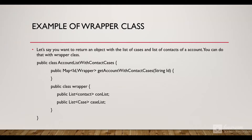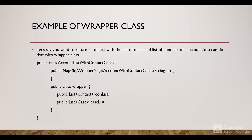Let's see an example of a wrapper class. Say you want to return an object with a list of cases and a list of contacts of an account. As we know, an account can have any number of cases and contacts. So for a specific account, instead of returning them separately, we can create a wrapper that would have two lists declared — a public list of Contact and a public list of Case. We will return that wrapper object as a map where the key is the account ID and the value is the wrapper class containing both lists.